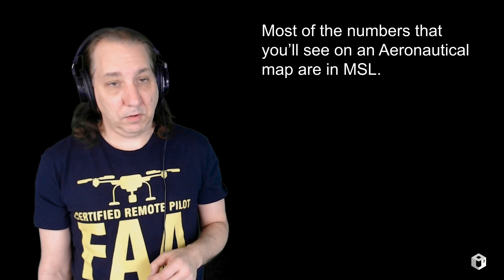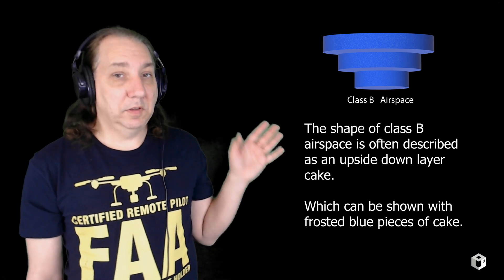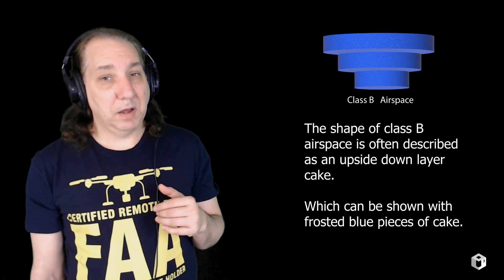Until we get to Class E, the numbers for controlled airspace on an aeronautical map are in MSL unless otherwise stated. Class B — I call it 'Class Blue.' It gets kind of strange. You see that upside-down layer cake? That's the shape of Class B airspace. On most aeronautical maps, Class B airspace is represented by a solid blue line. There are two or more layers of airspace stacked on top of each other, usually above a busy airport.